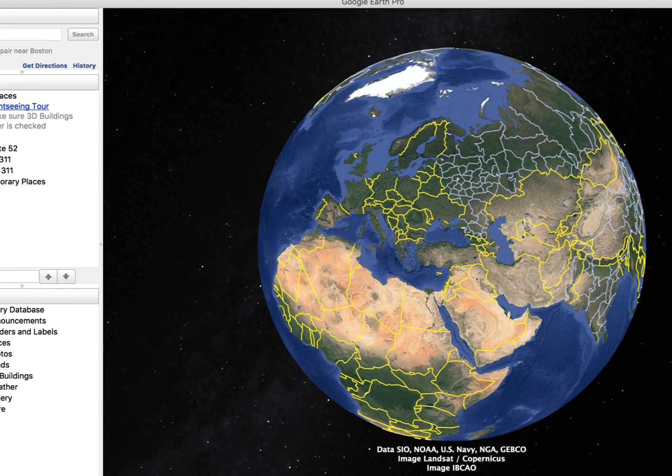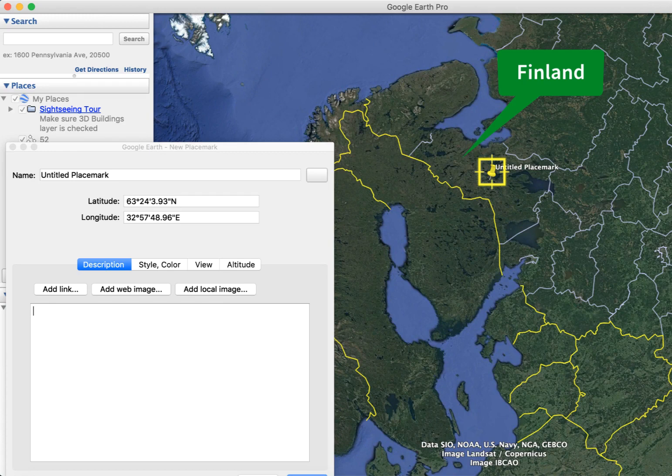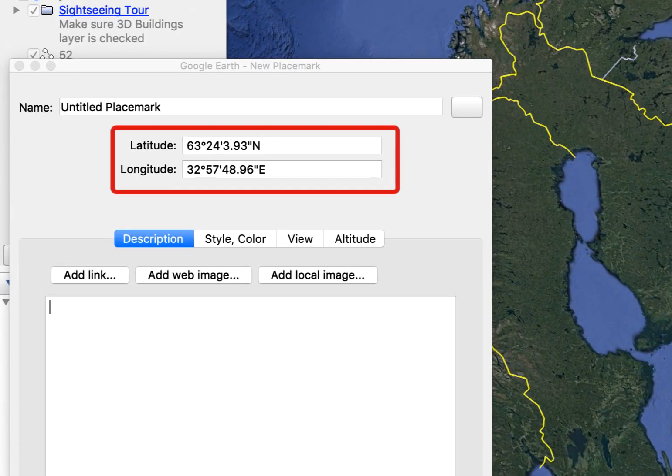In Google Earth, find the area you want to be the center point, then go to Add Place Mark. A box will appear along with a yellow square on the map. Drag the yellow marker to the area you want. Don't worry about marking the location too precisely. Here I'm using Finland. The info box will display the latitude and longitude coordinates.